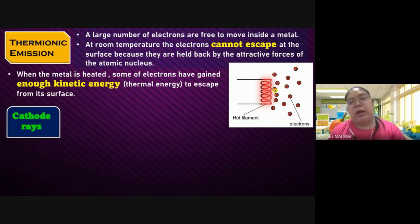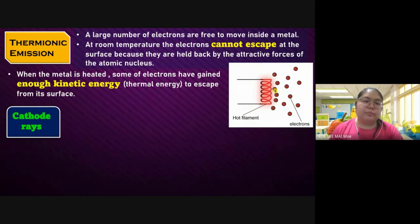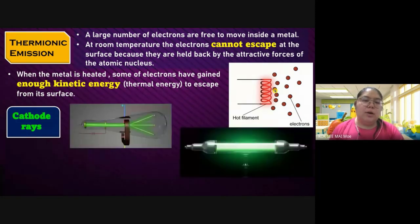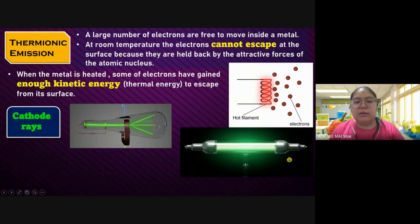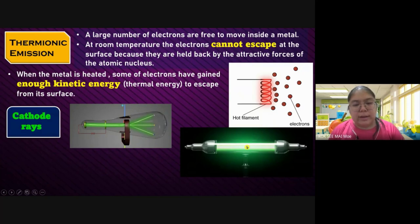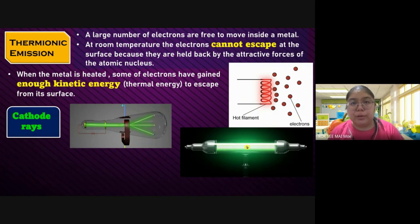Okay, cathode ray. The second thing I want to introduce is cathode ray. You can see the diagram — the green color. When it comes out from the filament, they go straight line, after that they go deflected — this we call cathode ray. So cathode ray — they are created by all the electrons joining together and moving. They produce a cathode ray.